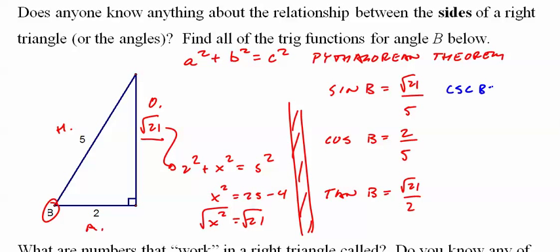Cosecant of B, 5 over root 21. Rationalize it, we get 5 root 21 over 21.